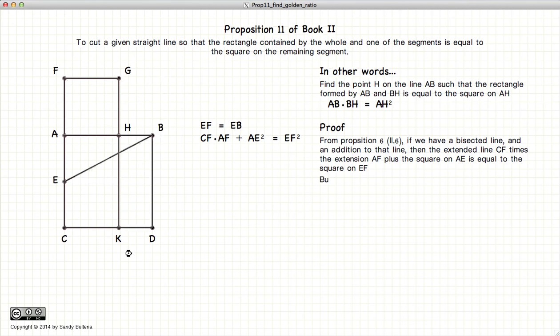Going back to our original diagram, now we have CF times AF plus AE squared equals EF squared. But EF is equal to EB, so we end up with this equality here.